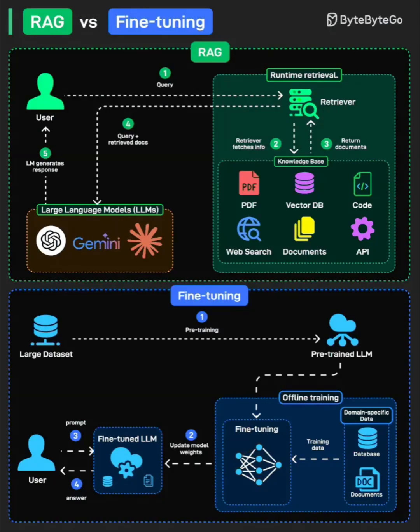The fine-tuning process involves taking that large dataset, running it through the pre-training phase with your custom data, and then conducting the actual fine-tuning where model weights get updated. The result is a fine-tuned LLM that has internalized your domain knowledge. When a user sends a prompt, they interact directly with this customized model and it generates answers based on what it learned during training.